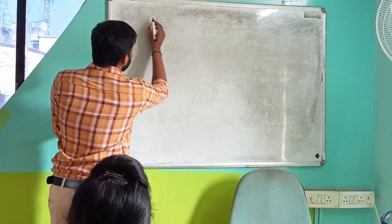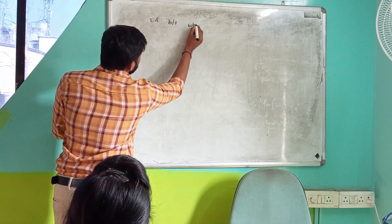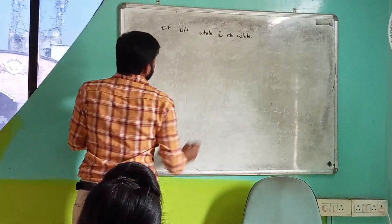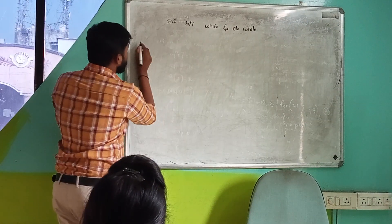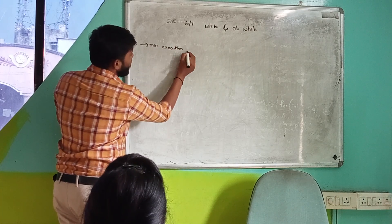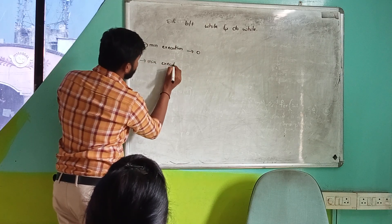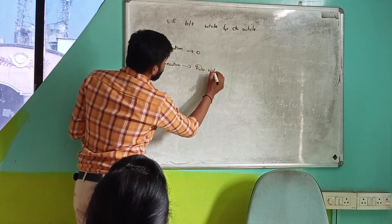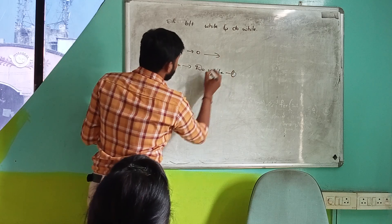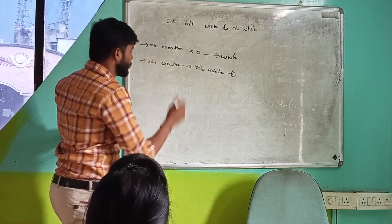We are discussing the difference between while and do-while loop. The minimum execution of a while loop is zero executions, and the minimum execution of a do-while loop is one execution. So while has a minimum of zero executions and do-while has a minimum of one.